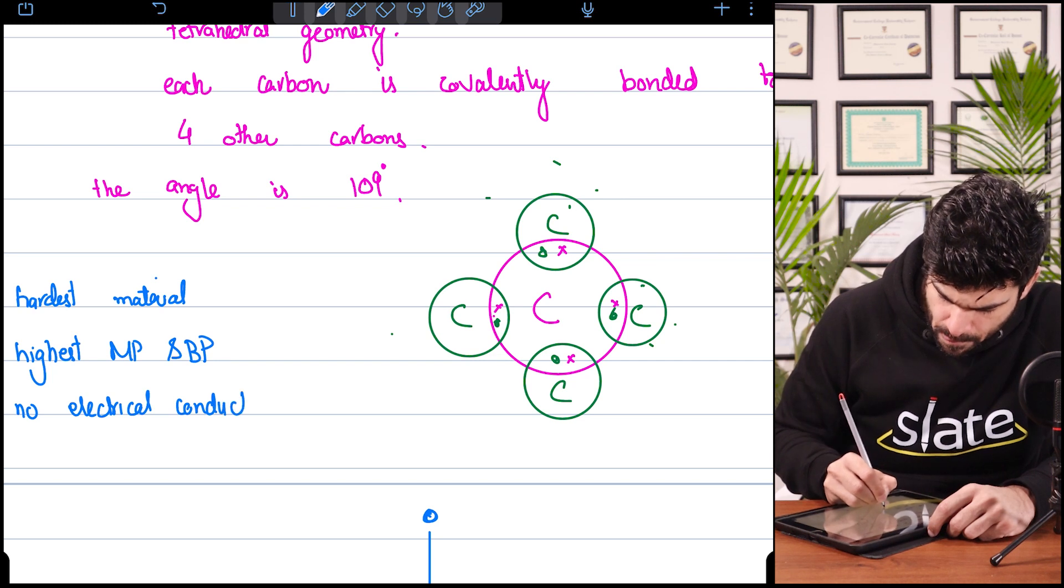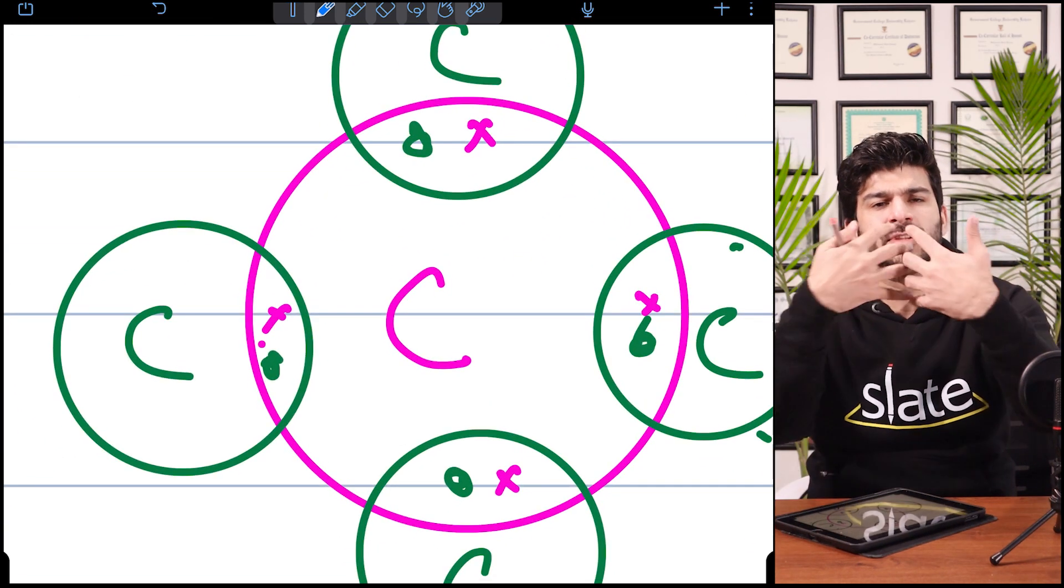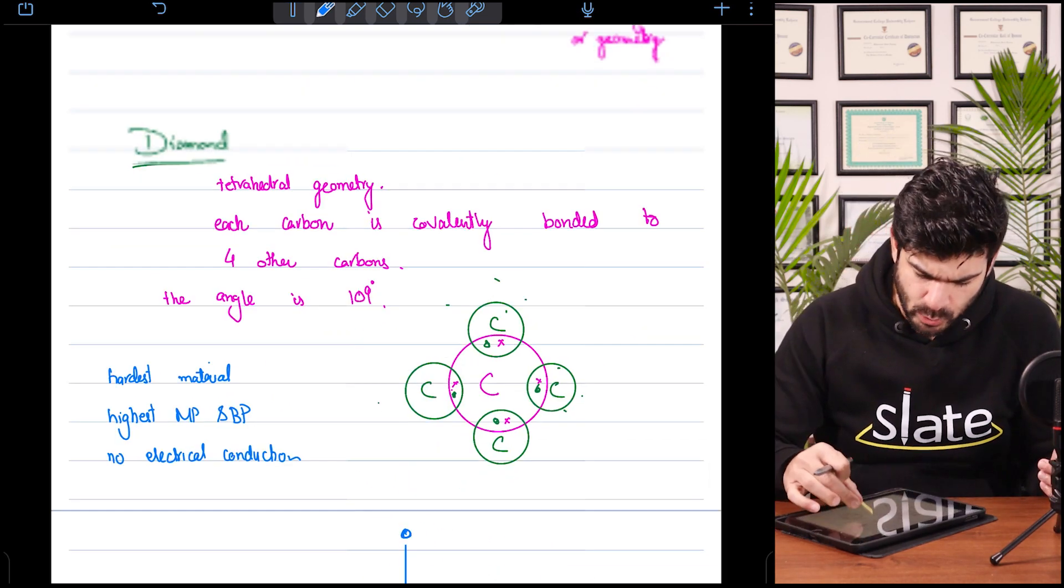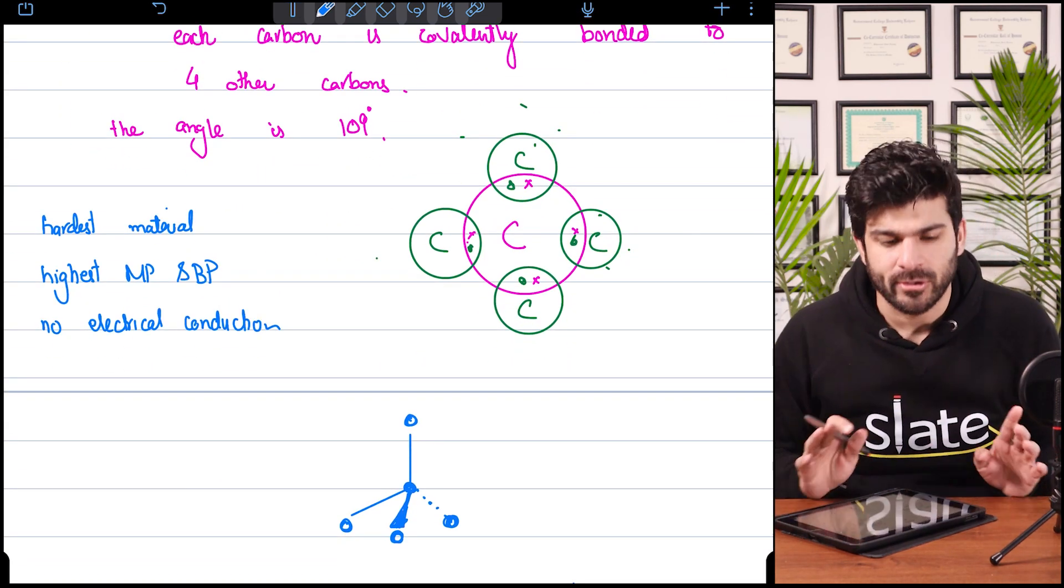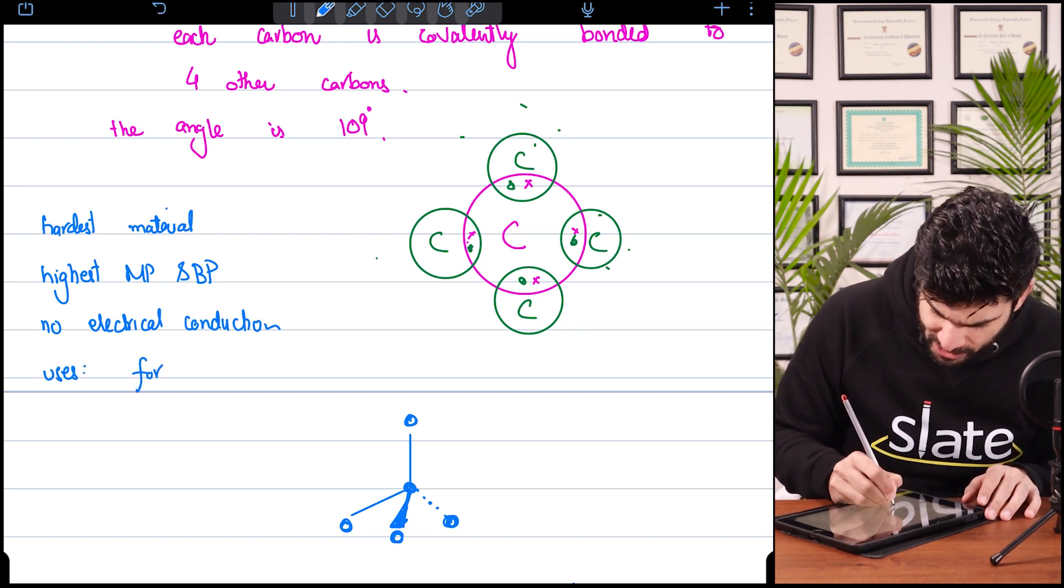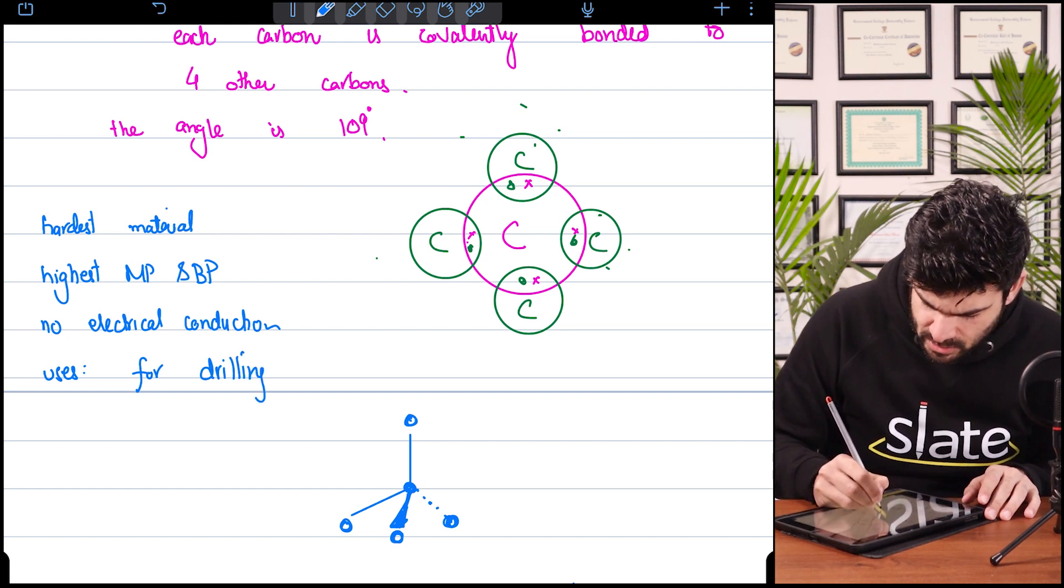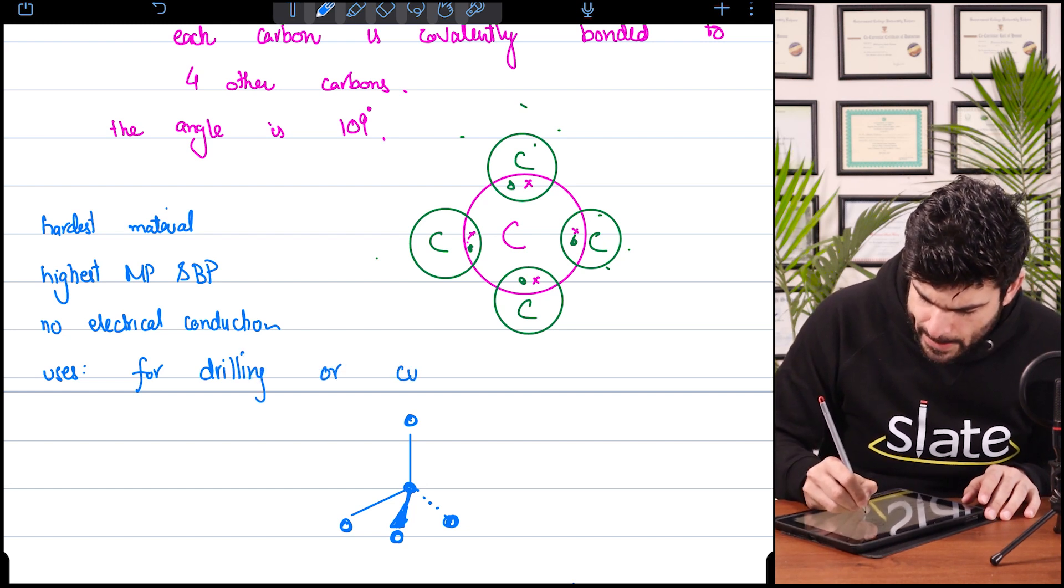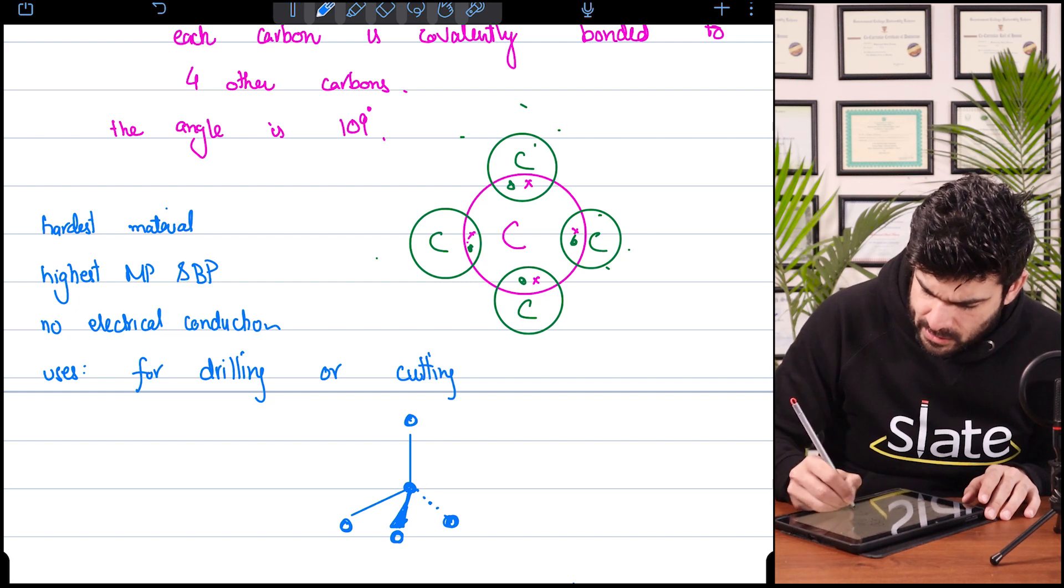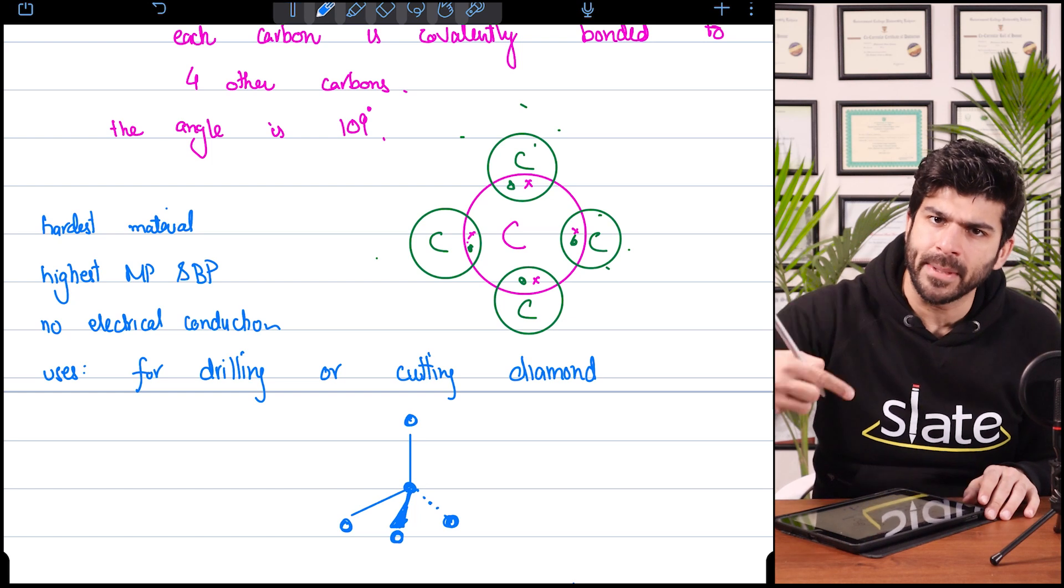Why? Because as you see, no electron is free. All of them are locked inside, so there's no electrical conduction. Uses for drilling as it's hard - it can drill any surface or cutting diamond jewelry. Diamond is so hard that only a diamond can cut diamond.